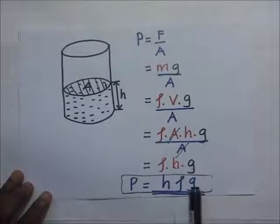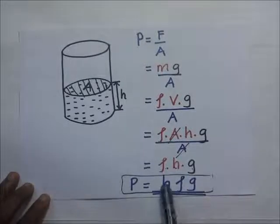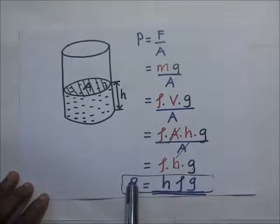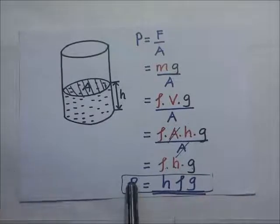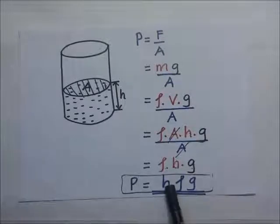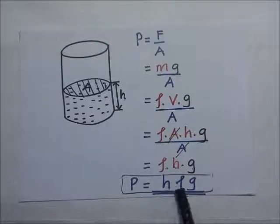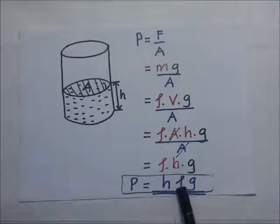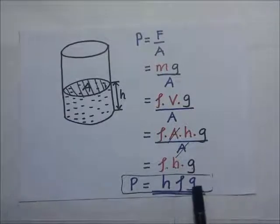The height must always be in meters, because the SI unit for pressure is newtons per meter squared. To get newtons per meter squared, height must be in meters, density must be in kilograms per meter cubed, and gravity is in meters per second squared.